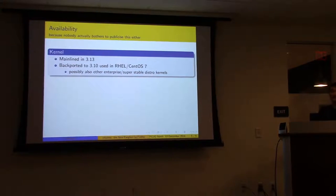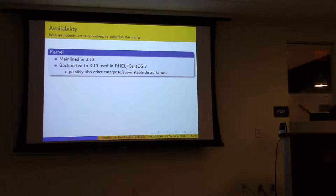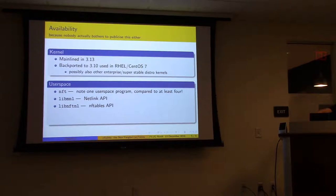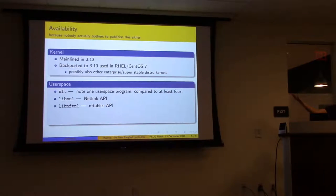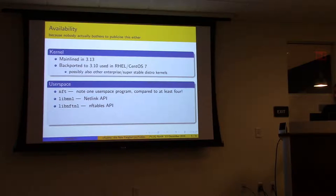It's very possible that if you're using some enterprise Linux distro stuck on an older kernel because they didn't want their ABI to break, they may have backported NFTables. Debian may have done it too, and obviously Red Hat since CentOS is based off RHEL. So that's the kernel half of things — really the rest is in user space.